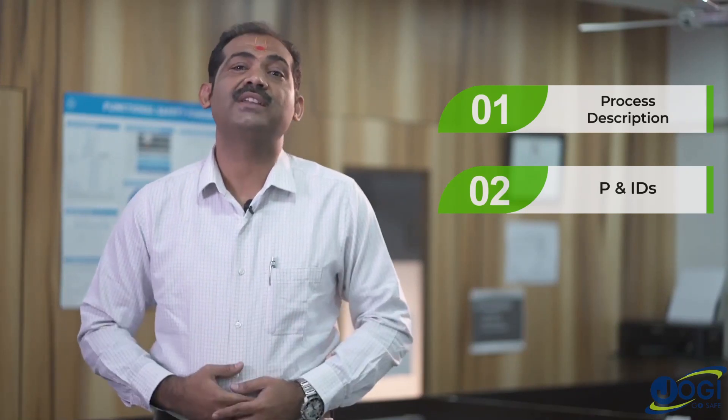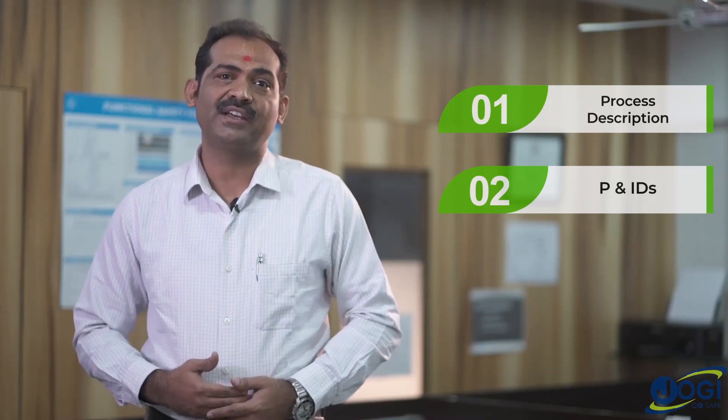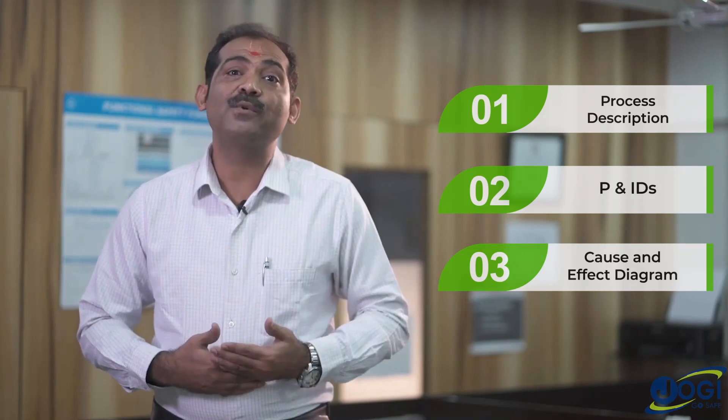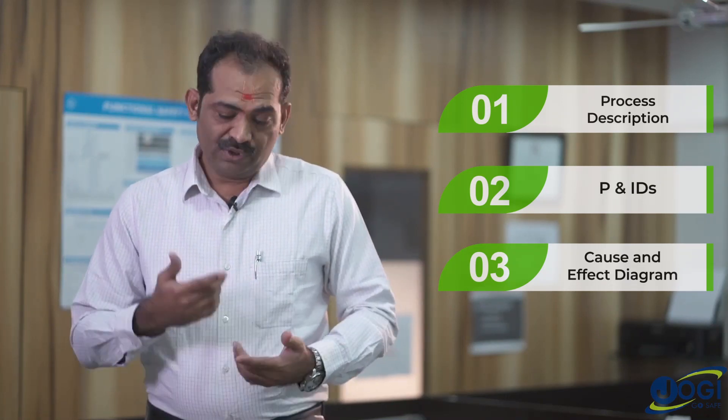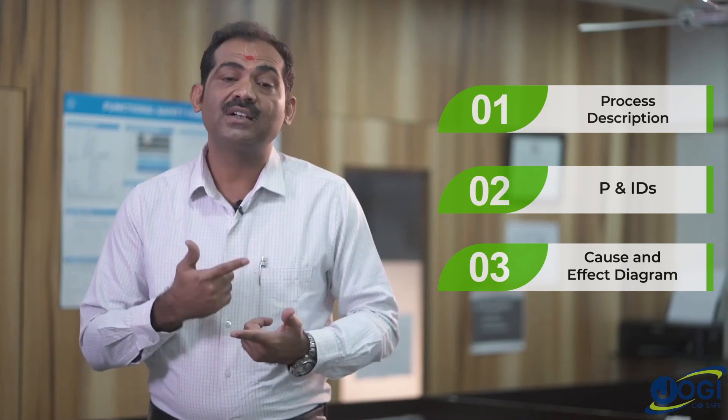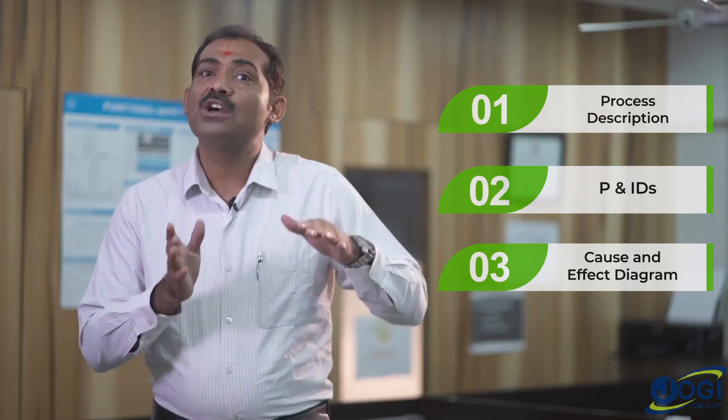Let us understand what the prerequisites are to conduct this hazard study. The first requirement is a detailed description of the process. The second is the P&ID, or piping and instrumentation diagram. The third, which is very important, is details about alarms, trips, controls, and interlocks — also called the cause and effect diagram. These three are the basic requisites; in some cases specific documents like layout or design documents may also be referenced.